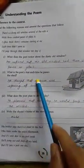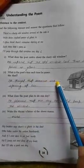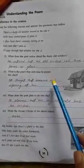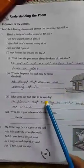What is the poet's fear each time he passes the shed? Whenever he passes through the shed, he thought that someone was staring at him, someone was keeping looking at him.